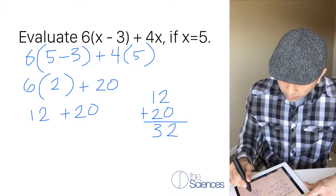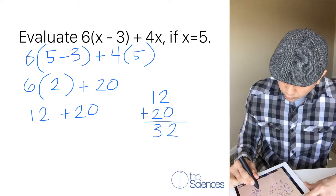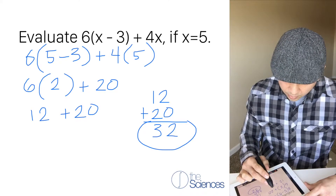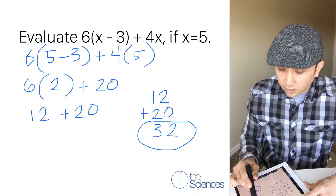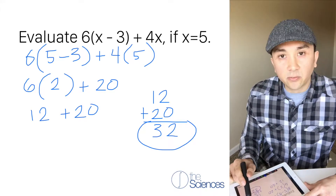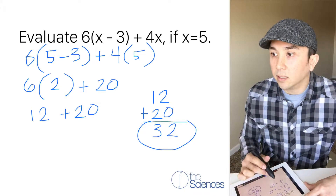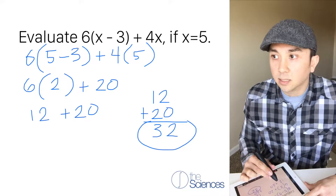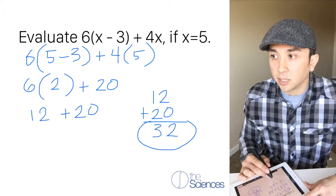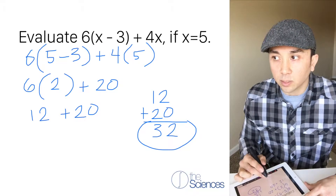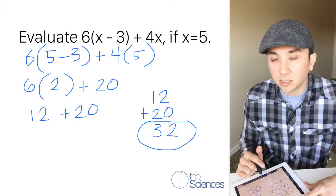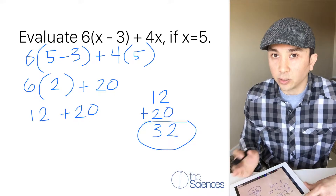12 plus 20 is 32, so our answer is 32. If we replaced x with 5 in the algebraic expression 6 times (x minus 3) plus 4x, what that really meant was 32.